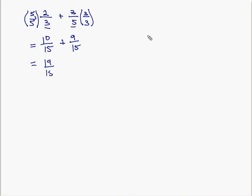This is called an improper fraction, and you're welcome to leave it as an improper fraction. If we were to make it into a mixed number, we would ask ourselves: nineteen-fifteenths turns into one and four-fifteenths. So the improper fraction is nineteen-fifteenths, and the mixed number is one and four-fifteenths.